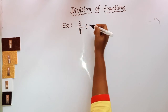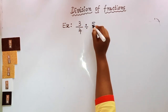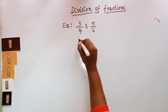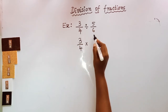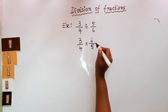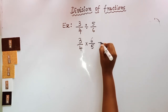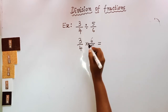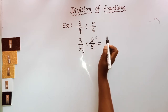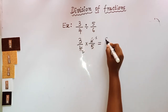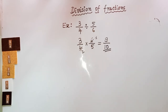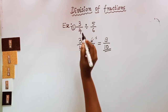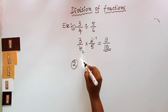Now let us work without using fraction strips. Now that you understand the concept, let us look at the theoretical part. 3/4 divided by 5/6: keep the first fraction as it is, take the reciprocal of the second fraction, then multiply. 3/4 × 6/5. Now 4 and 6 are divisible by 2, giving 3/2 × 3/5 = 9/10. So 3/4 divided by 5/6 is equal to 9/10.